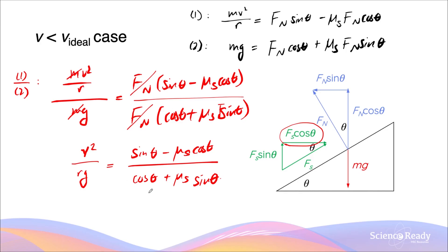This expression is for when the static friction is acting up the slope — that is, when the vehicle's velocity is slower than the ideal velocity. Again, like before, you can see that if friction is not present and μ equals zero, the right-hand side fraction simplifies to just sinθ divided by cosθ, which simplifies to tanθ. That gives us exactly the same expression as the no-friction case derived in the previous video on banked surfaces without any friction.